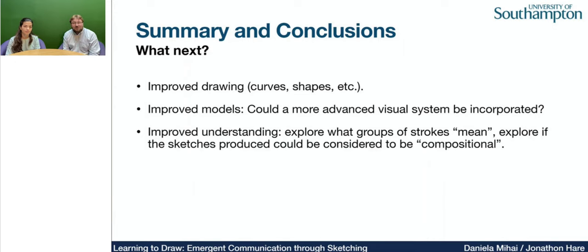So where do we go next? There are many avenues for future research — for example, we could improve the drawing by adding curves, shapes, and different colors. We're also interested in improving the model; currently we're looking at replacing the VGG16 visual feature extractor with a more advanced one based on a pre-trained vision transformer from CLIP.